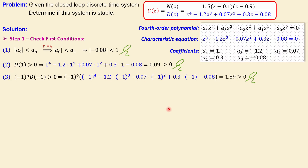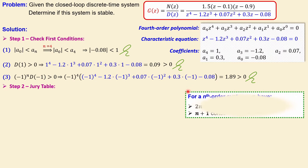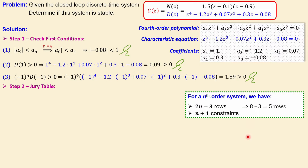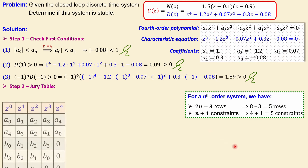If any of the three conditions fail, we can stop and say the system is not stable. Since all pass, we now set up the Jury table. For an n-th order system, we have two n minus three rows. For n equals 4, that gives eight minus three equals five rows. The number of constraints equals n plus one, which is five. We have already checked three, so we need to check two more.